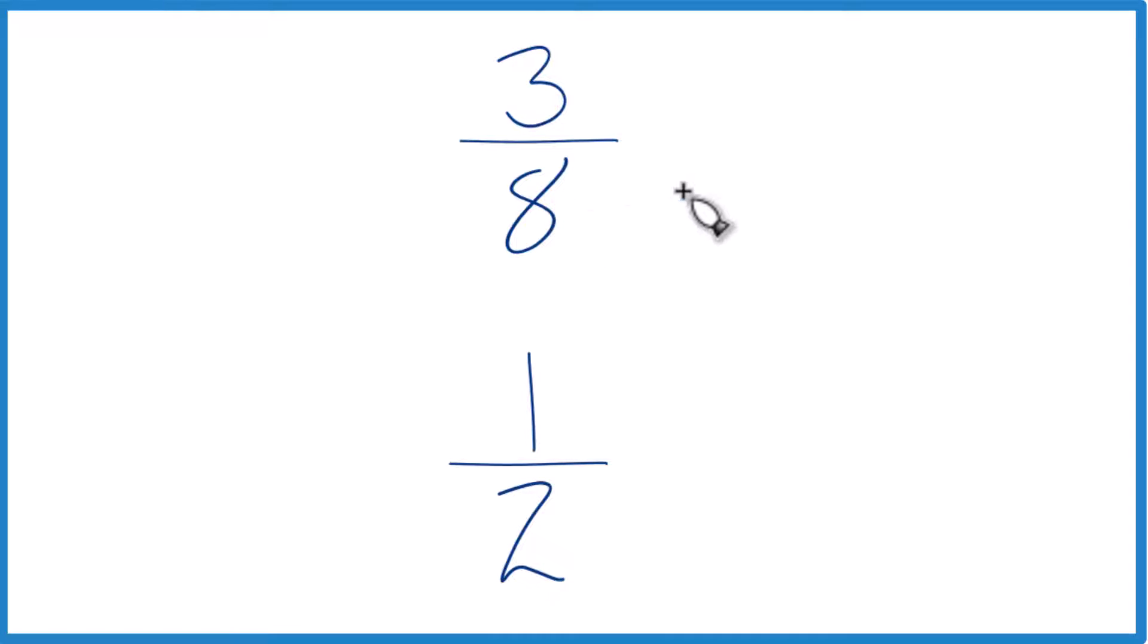First, you could divide 3 by 8, get a decimal. 1 by 2, get a decimal. Just compare them. That would tell you if 3 eighths is greater than or less than 1 half.